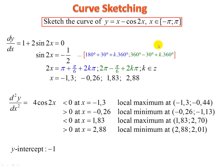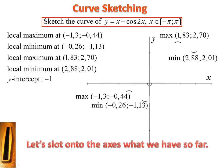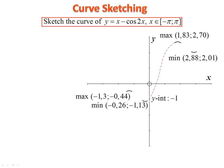The y-intercept: substitute 0 to get negative 1. Now slot all the local maxima and minima onto the axes — notice maximum shapes and minimum shapes. Put in the y-intercept at negative 1. Looking at the shape, the curve comes from there, up, down to there, further down, back up — there is only one x-intercept. Estimate at approximately 0.5.